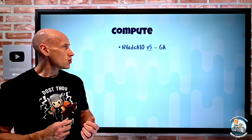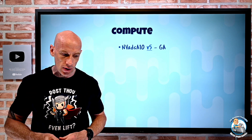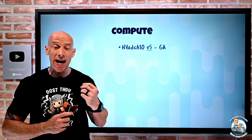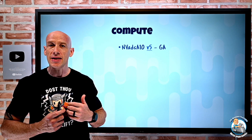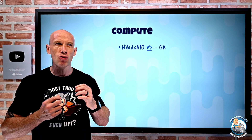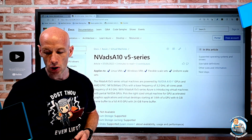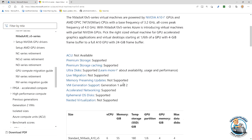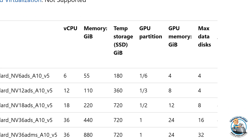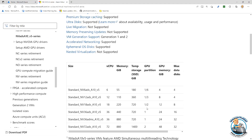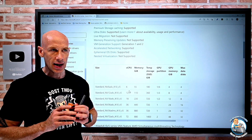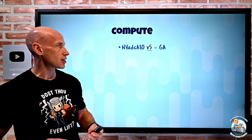On to the new features. The NVADS A10 V5 has gone into GA. This is powered by the NVIDIA A10 Tensor Core GPUs and uses AMD EPYC processors. What's interesting about this series is rather than having to pay for a complete GPU, I can pay for partial GPUs. Looking at the SKUs, I can get a sixth, a third, half, or complete GPU offerings — each with different amounts of virtual CPUs and memory. These are super useful for accelerated graphic applications and virtual desktops.